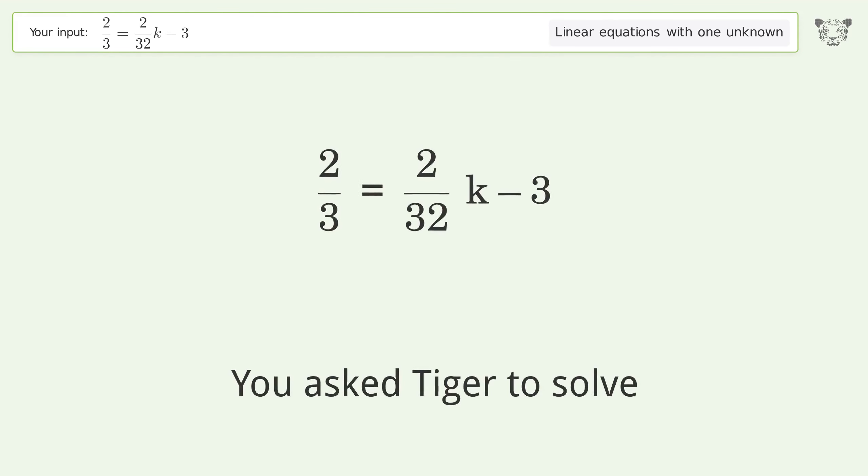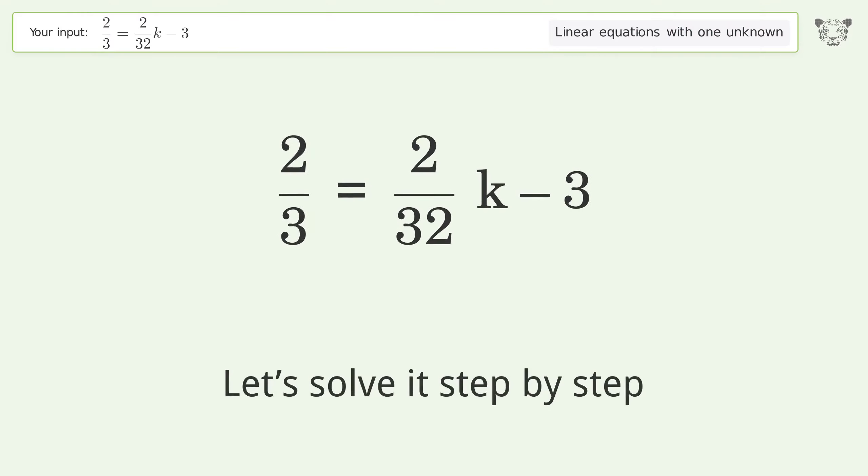You asked Tiger to solve this. It deals with linear equations with one unknown. The final result is k equals 176 over 3. Let's solve it step by step.